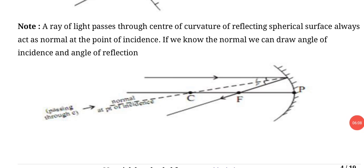Now we will discuss important note: a ray of light passing through center of curvature of reflecting spherical surface always acts as normal at the point of incidence. If we know the normal, we can draw angle of incidence and angle of reflection. It means any line parallel to principal axis, when it goes through focus, if we draw between focus and center of curvature, taking center of curvature as base, as normal, we will see that angle of incidence and angle of reflection are equal.